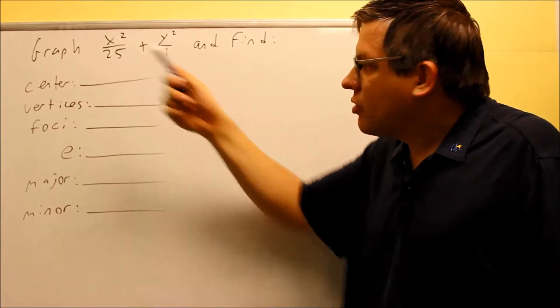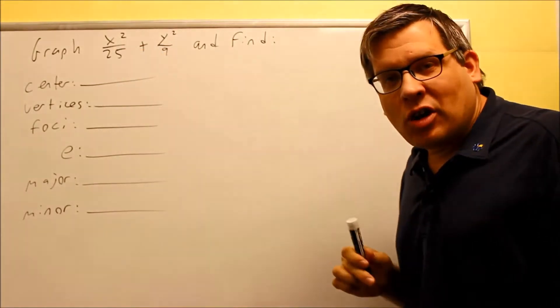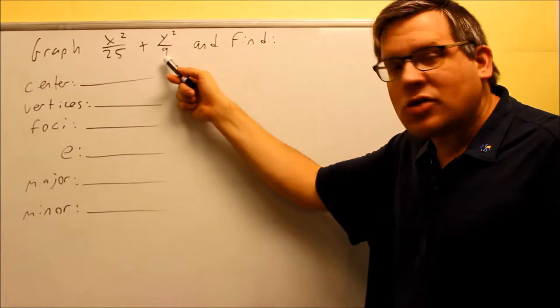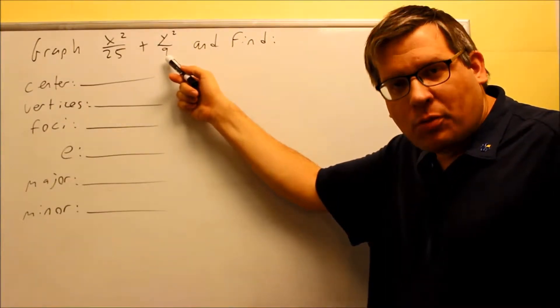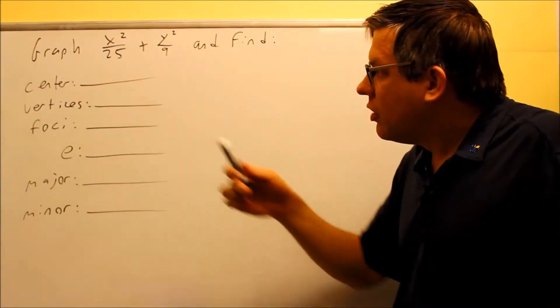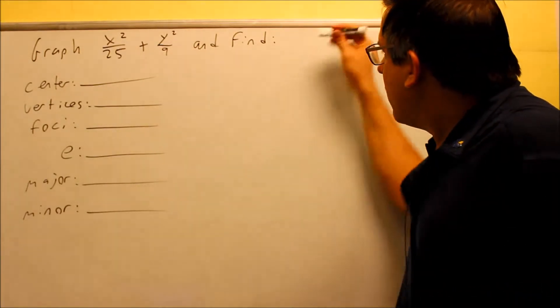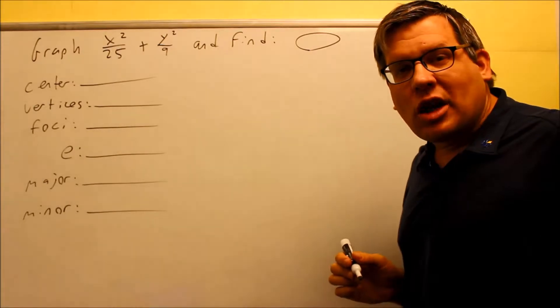Now wherever you see the larger number, if it's underneath the x variable, that means it opens up sideways. If the larger number here appears underneath the y, that means it opens up and down. So this particular one, since the 25 is underneath the x squared, that's the larger number there, that means that this is going to be an ellipse that opens up sideways.